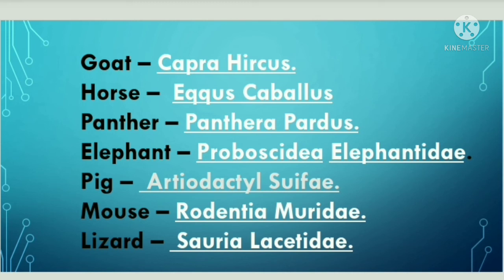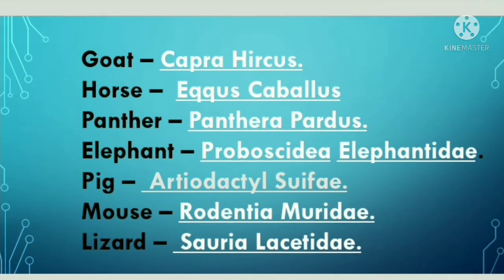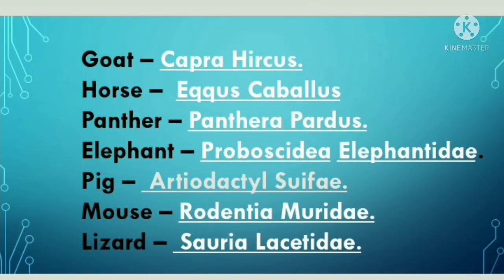Scientific name of pig is Artiodactyla suidae. Scientific name of mouse is Rodentia muridae. Scientific name of lizard is Sauria lacertidae. So this is all for today. As we know, scientific names are very hard to memorize, so I have covered the most important ones. I hope you liked this video — thank you for watching and investing your time on this channel. If you find this video like-worthy, do like, share, and subscribe. We will meet in the next video. Till then, take care and bye-bye.